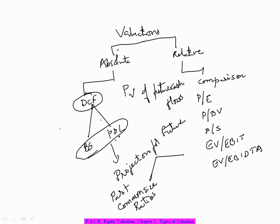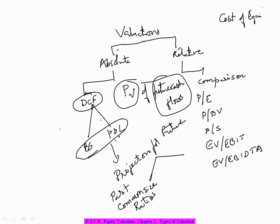Once I get the future cash flows, I have to find the present value of that. Present value of that is nothing but applying the time value of money factor. So there should be some kind of rate at which I need to do that discounting. What is the expected rate for me for each of the years? That number at which we are discounting every year is actually called as your cost of equity or sometimes we use weighted average cost of capital.